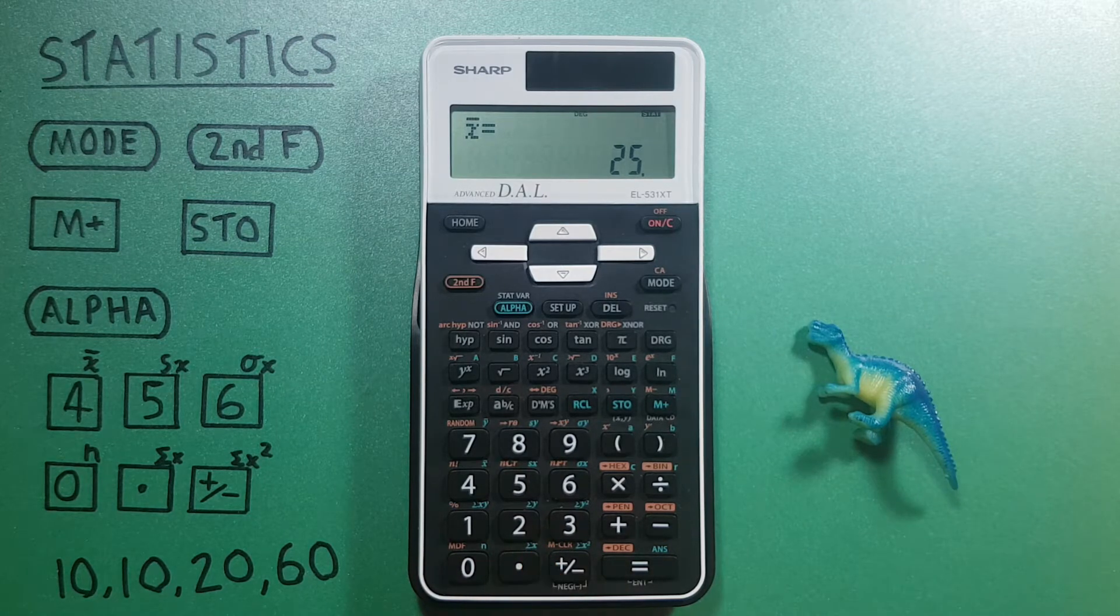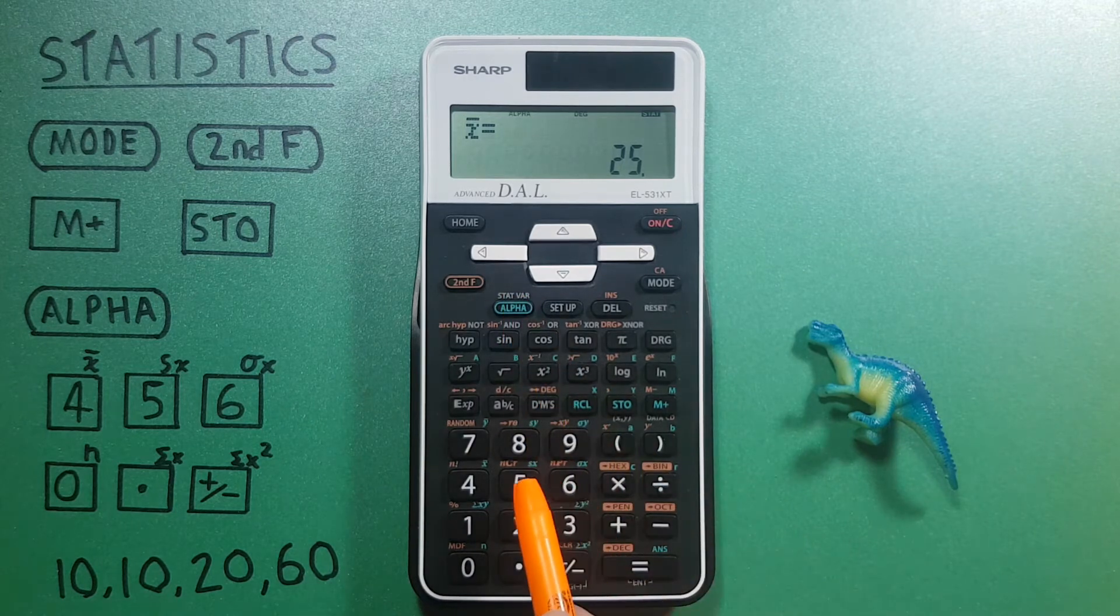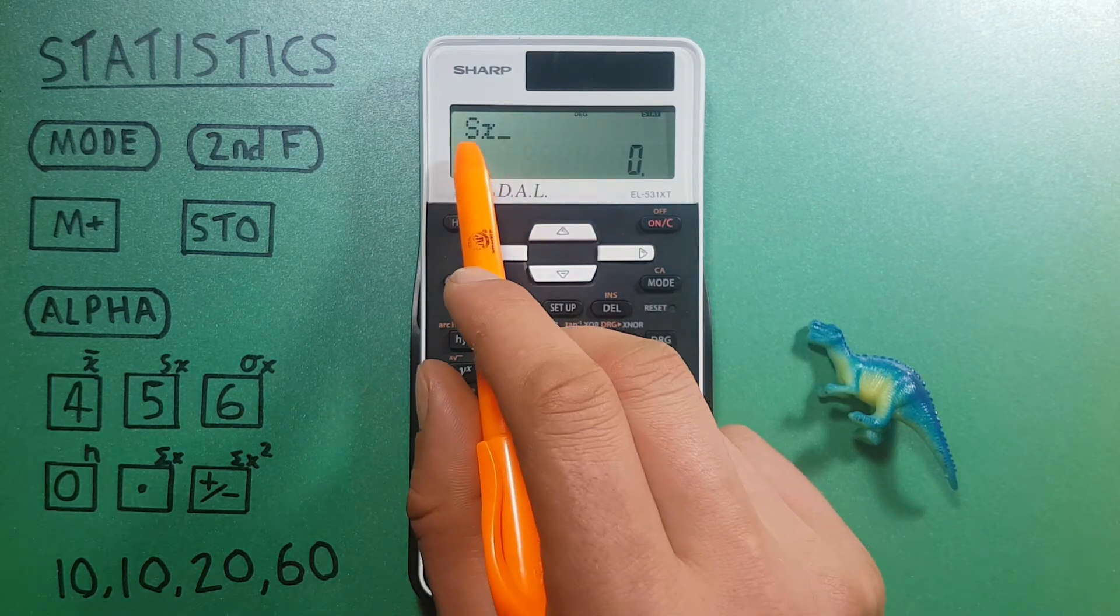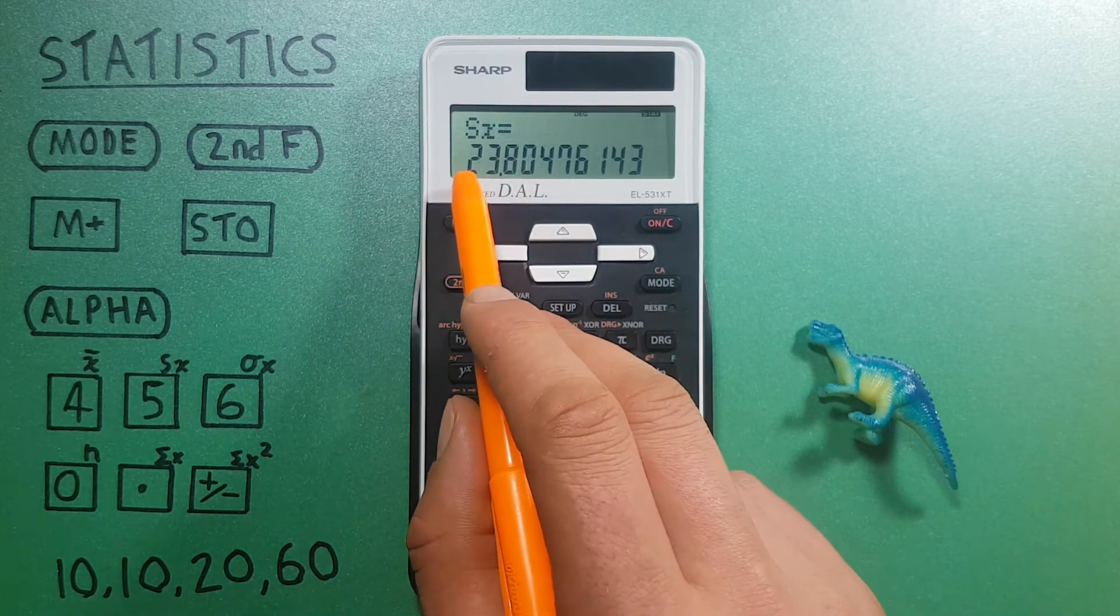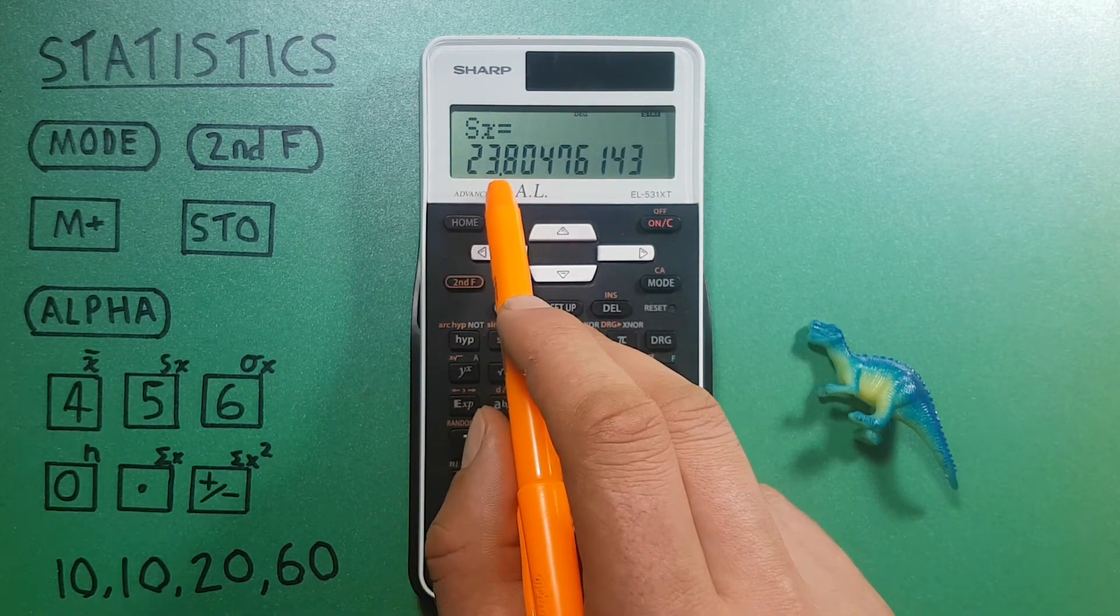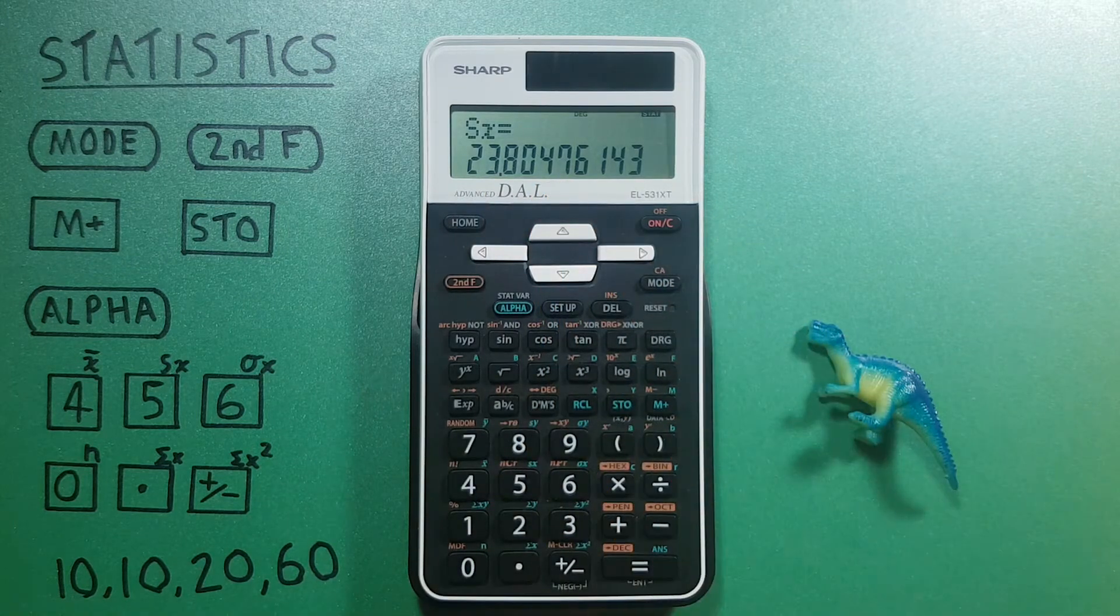Next we can find the sample standard deviation by pressing alpha five, which gives us this SX symbol, and then we press enter. And there we go, our sample standard deviation of 23.80476.